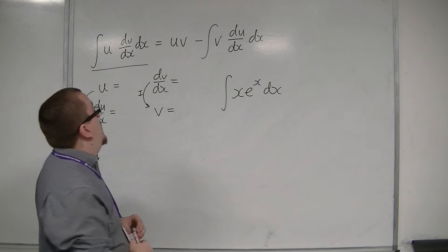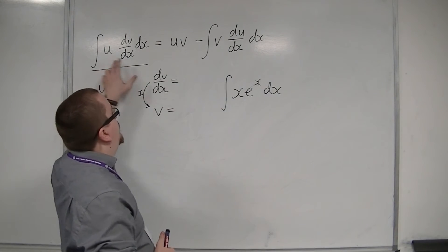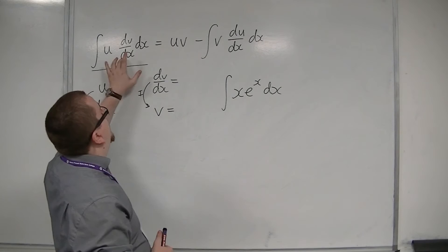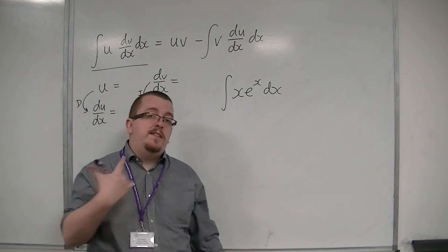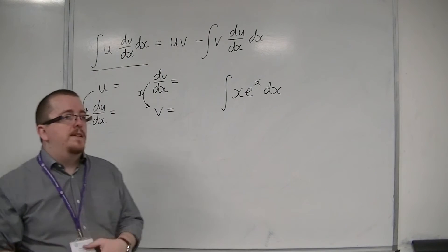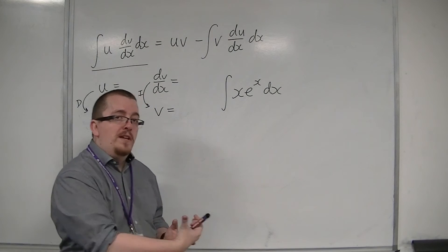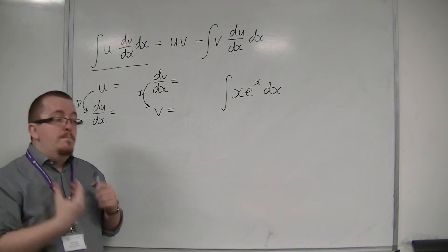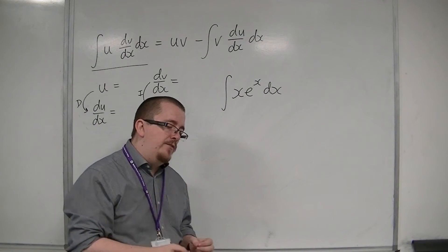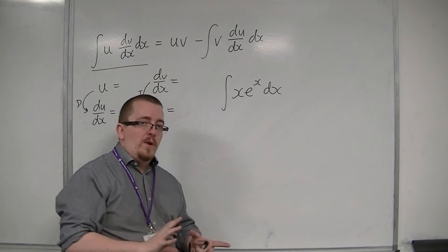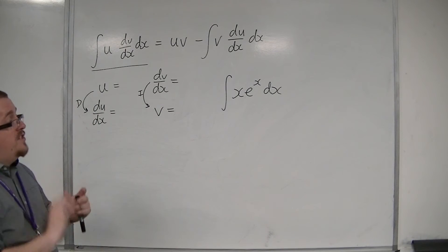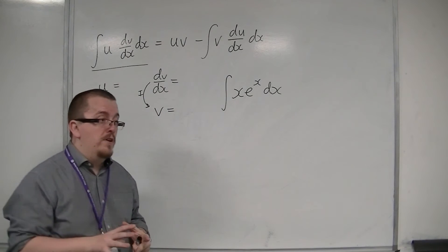Now, just because we have the u first and the x first, and the dv by dx second, and the e to the x second, doesn't mean that the u is necessarily the x, and the dv by dx is necessarily the e to the x. We must have a way of being able to identify which is going to be which, because it's not always going to be in that order for us.